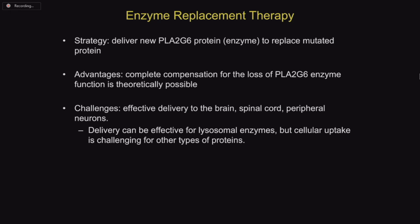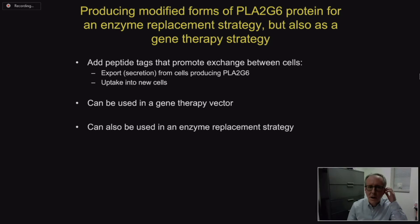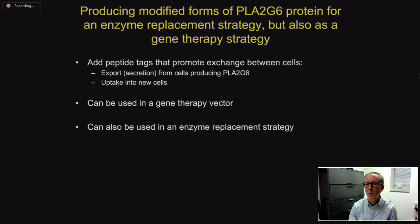We're also thinking about whether enzyme replacement can help improve gene therapy. Our approach is to modify the protein by adding tags that could promote its ability to be exchanged between cells. If you can get the protein to some cells, they may be able to release or exchange it with surrounding cells, making treatment more effective in reaching all the cells that need it.